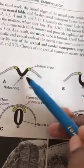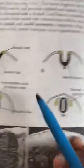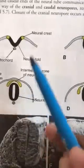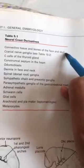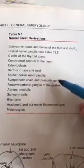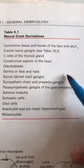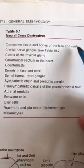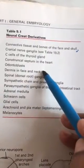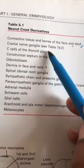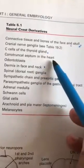The neural crest cells form as the neural tube is approximated, detaches from the ectoderm, and the ectoderm closes over. The neural crest cell derivatives are an important short note. Number one: connective tissue and bones of the face and skull. Number two: dermis of the face and neck. Number three: cranial ganglia. Going down to the neck, number four: C cells of the thyroid gland and the parafollicular cells. Number five: odontoblasts, present in the teeth.